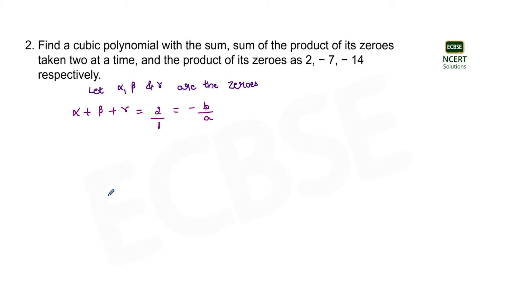Also it's been given in the question that alpha into beta plus beta into gamma plus alpha into gamma equals minus 7 which can also be written as minus 7 by 1. And we know that the sum of the product of its zeros taken two at a time, that is alpha into beta plus beta into gamma plus gamma into alpha, equals c by a.